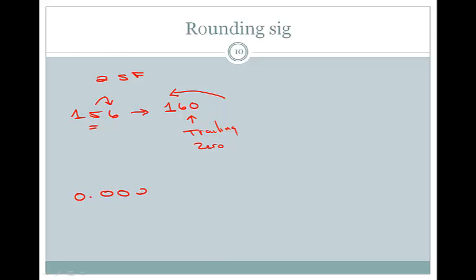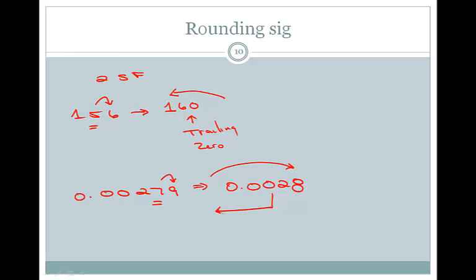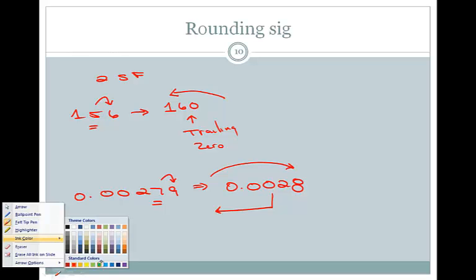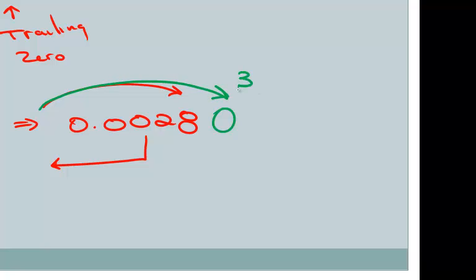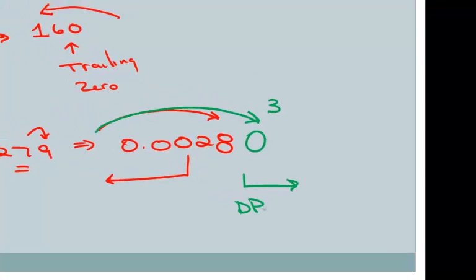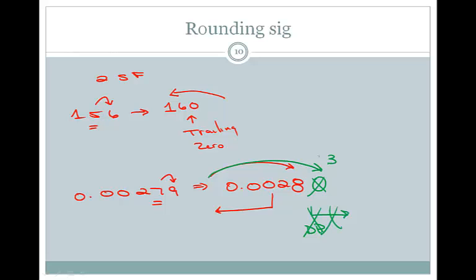Looking at 0.00279 rounded to two significant figures: the second significant figure is the 7, and the 9 tells the 7 to become an 8. So this number rounds to 0.0028, which has two significant figures. The decimal point is present, so the Atlantic-Pacific rule says count from left to right — we have the 2 and the 8. The leading zeros are never significant. We cannot add an extra zero after the 8, because with a decimal point present, that trailing zero would count as significant, giving us three significant figures instead of two.